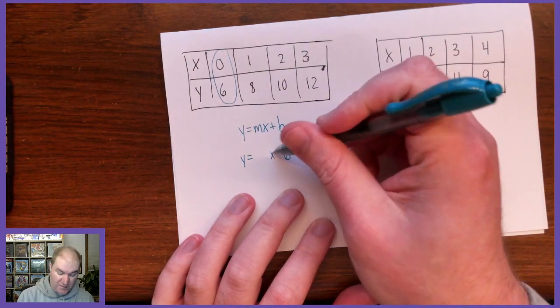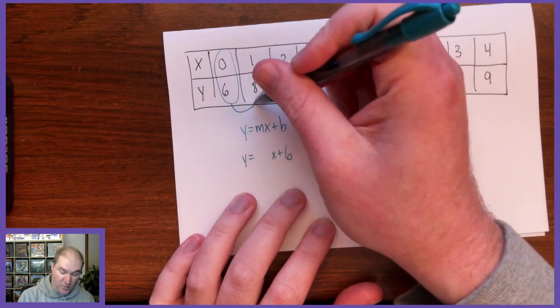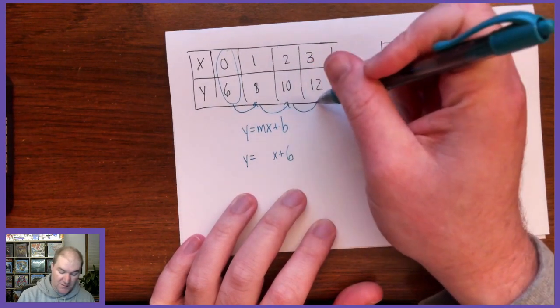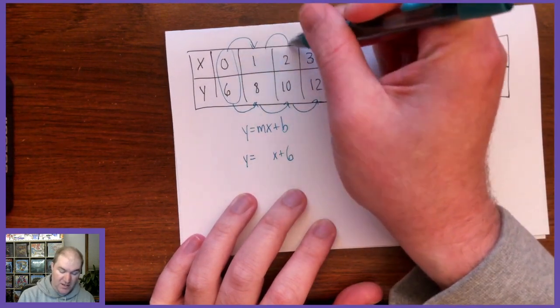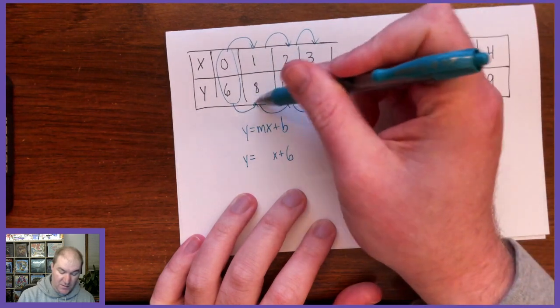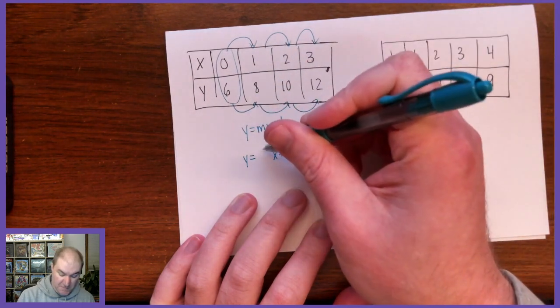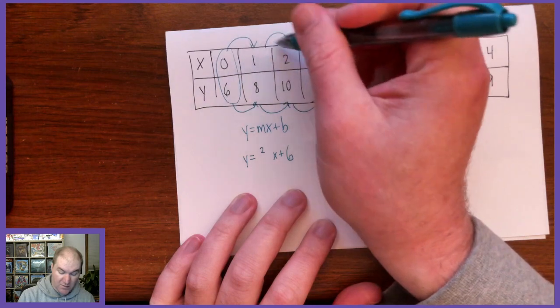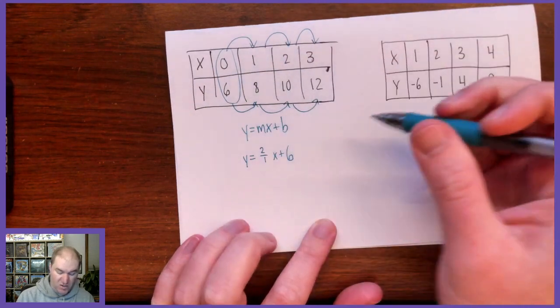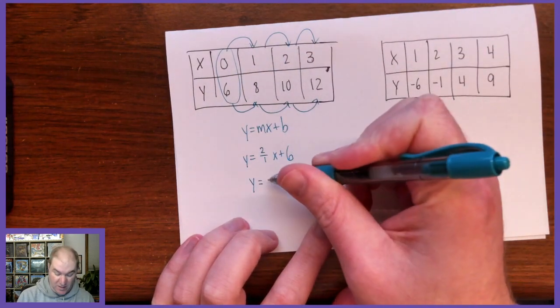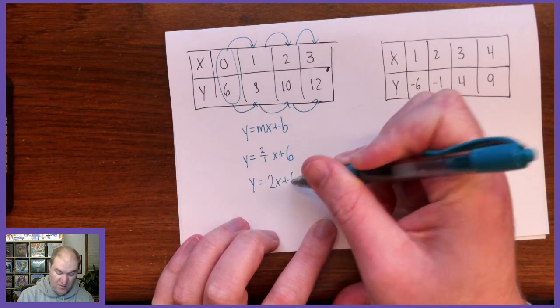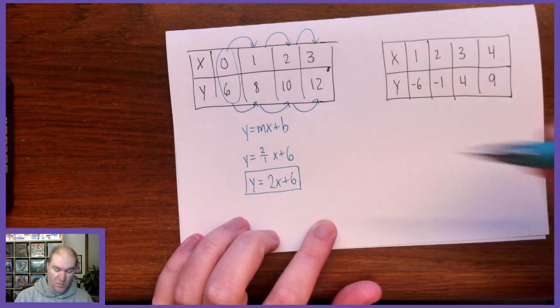And then to find the slope of this line, you just find how much the y is increasing and divide it by how much the x is increasing. So these keep going up by 2, and these keep going up by 1. So the slope is 2 over 1, which would just simplify to be 2x. So the equation of this is y equals 2x plus 6.